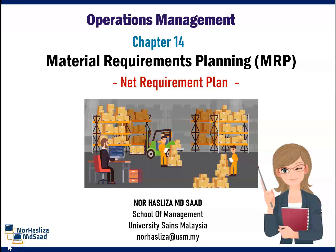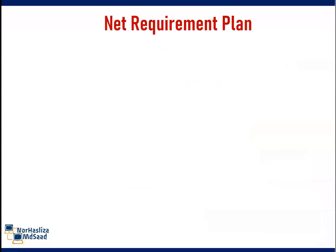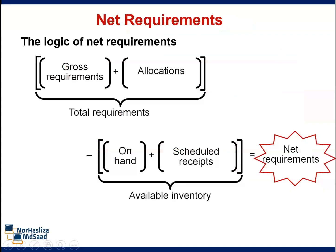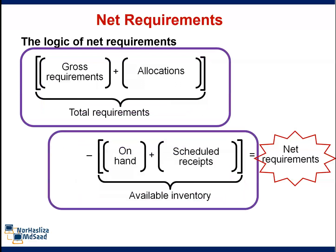Net Requirement Plan: It is the result of adjusting gross requirements for inventory on hand and scheduled receipts. The formula for net requirement is total requirement from gross requirements and allocation minus the available inventory, and we will get the net requirement.